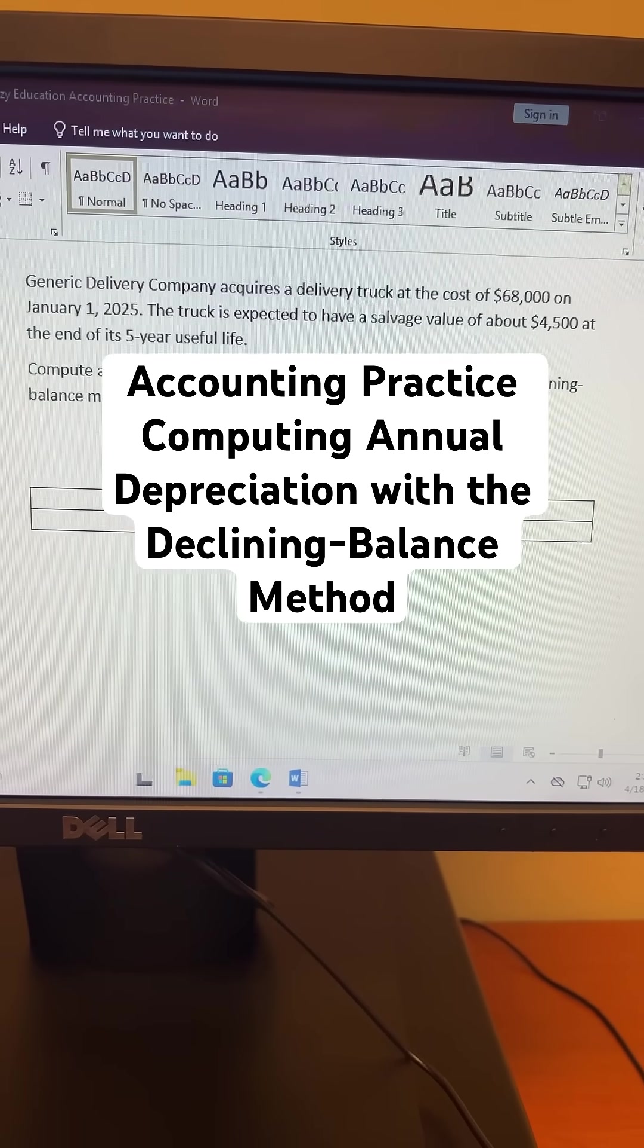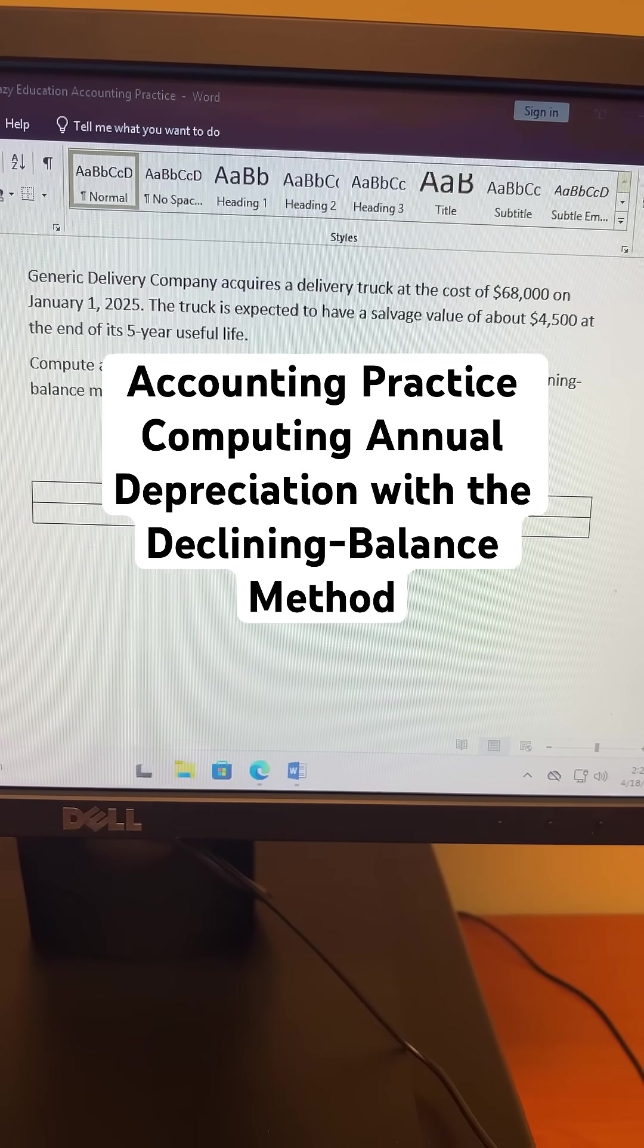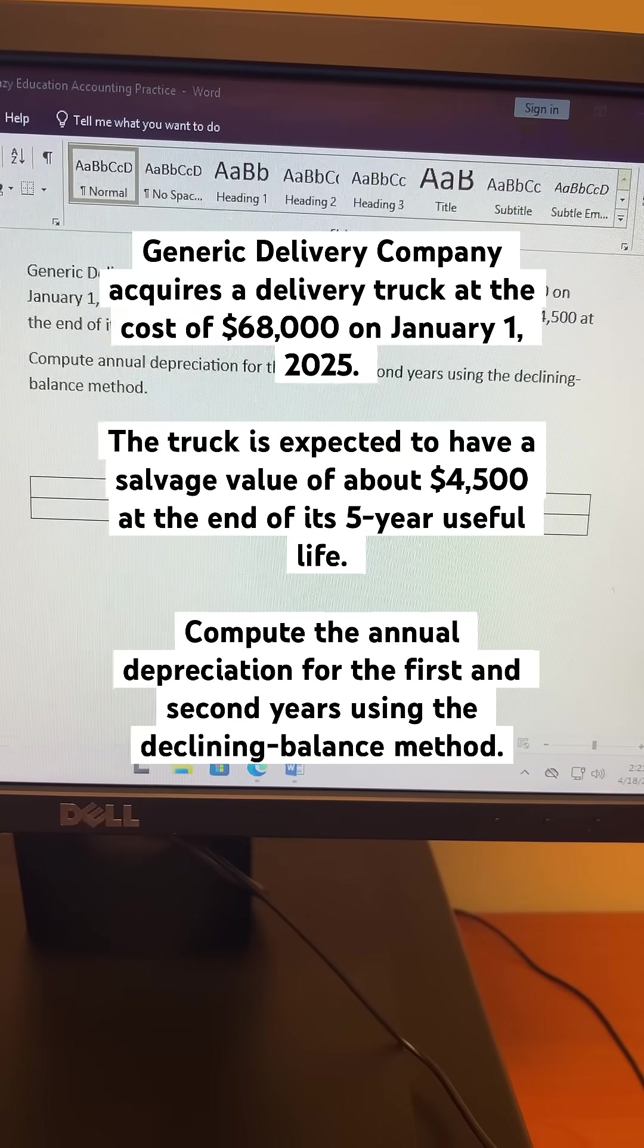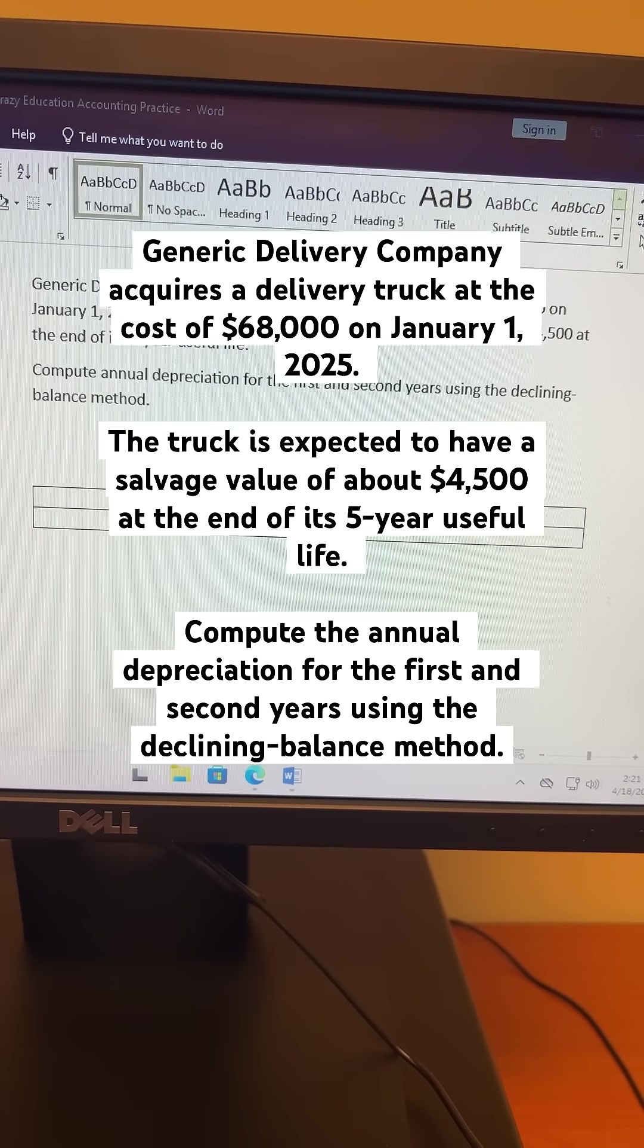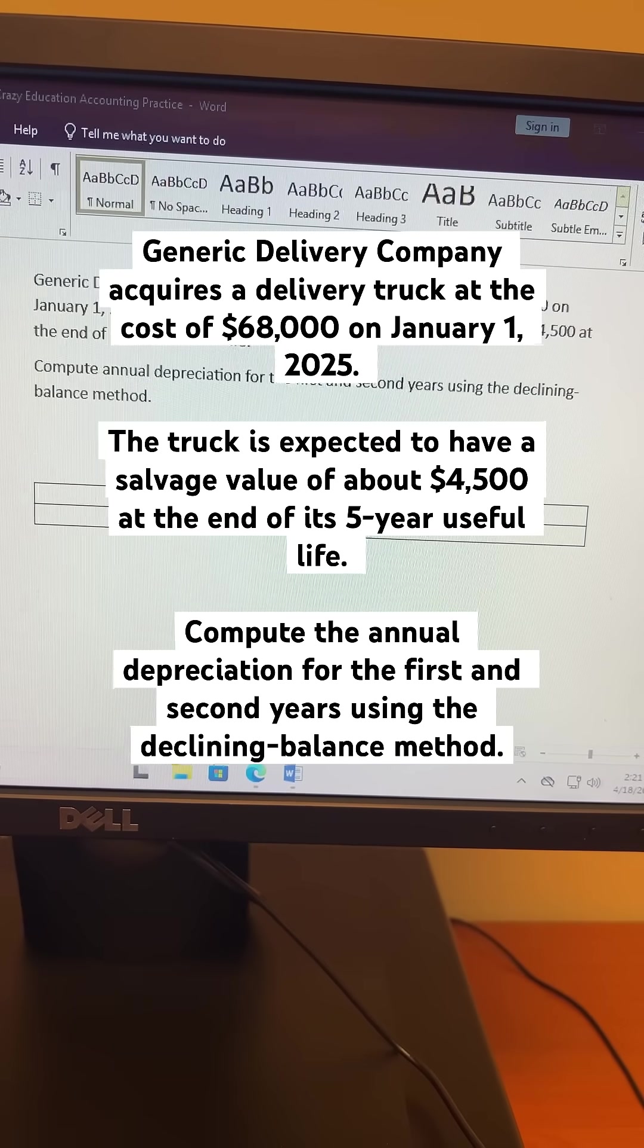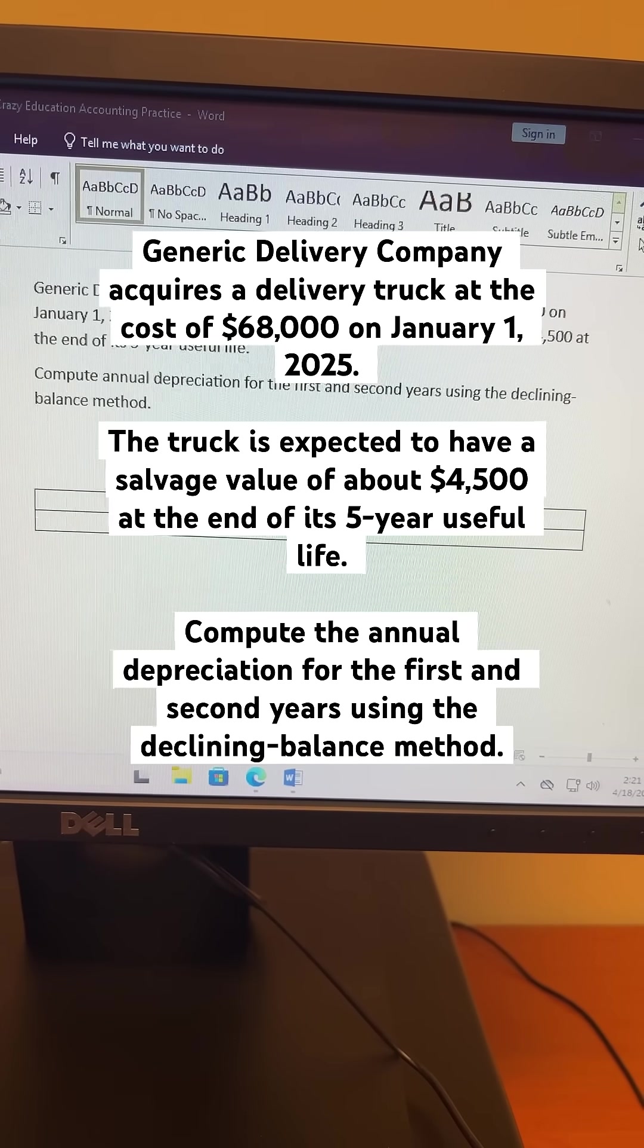Generic Delivery Company acquires a delivery truck at the cost of $68,000 on January 1st, 2025. The truck is expected to have a salvage value of about $4,500 at the end of its 5-year useful life. Compute the annual depreciation for the first and second years using the declining-balance method.